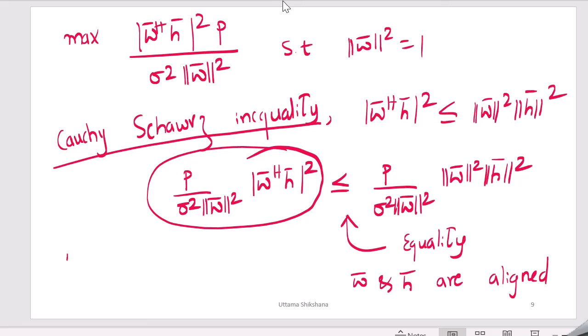But we need to consider this particular condition that norm of w bar equals 1. To meet this condition, your actually w bar can be written as h bar over norm of h bar. If you use this as w bar, then your SNR is maximized and also your norm w bar square will also become 1. This w bar is called as spatially matched filter.